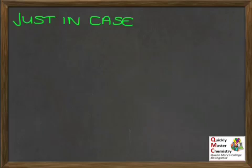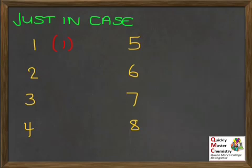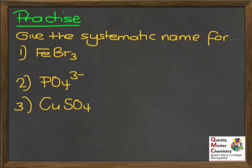The work we've done with systematic inorganic nomenclature assumed you knew about Roman numerals. Just in case you don't, here's a quick list of numbers 1 to 8 — you wouldn't really ever need to go beyond that. To wrap up our journey into systematic inorganic nomenclature, here are a few to have a go at. Pause the video and see if you can figure out the systematic name for these compounds.